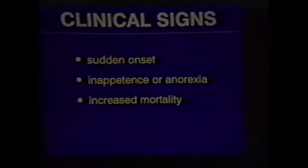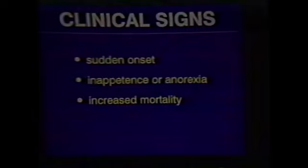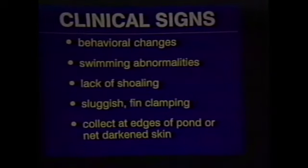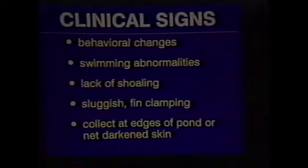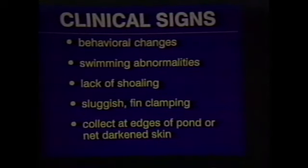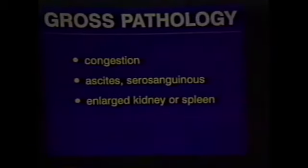Clinical signs: typically these animals present with acute septicemia having a very sudden onset. They can have inappetence or anorexia and increasing mortality. You can have behavioral changes and swimming abnormalities. Typically, fish would like to shoal and see them swimming around the margins of the net pens within salmonid industries. One of the features of disease is a lack of shoaling. There can be sluggishness, fin clamping, as well as collection of the fish along the edges of the ponds and darkened skin. This seems to be a very nonspecific response of fish just to generalized disease processes.